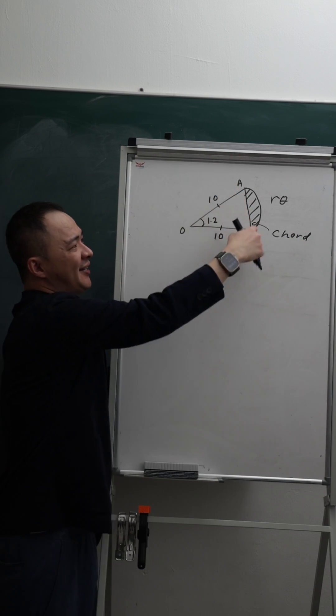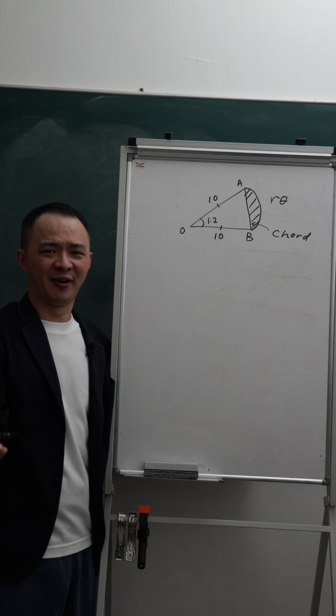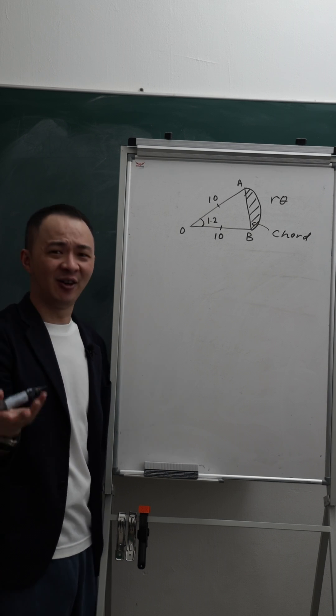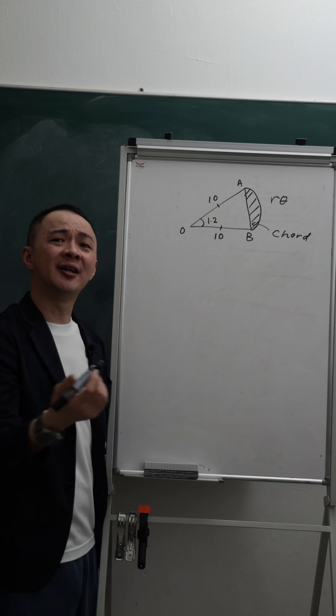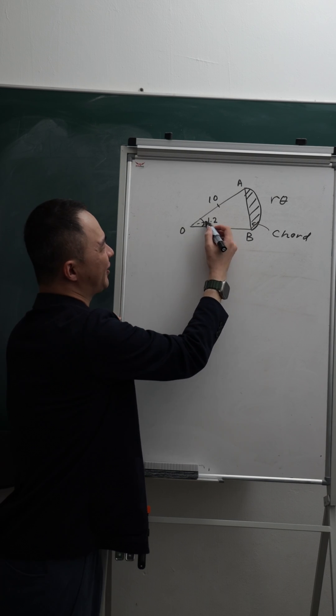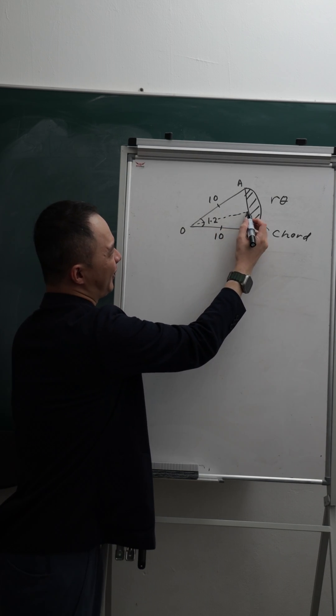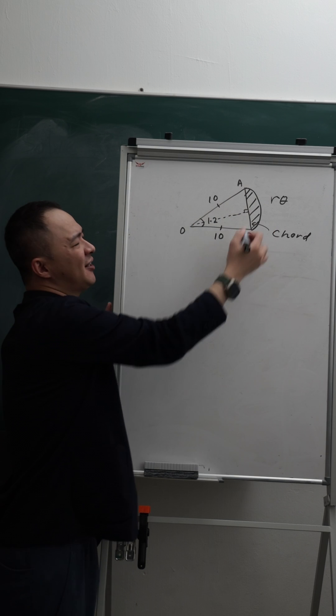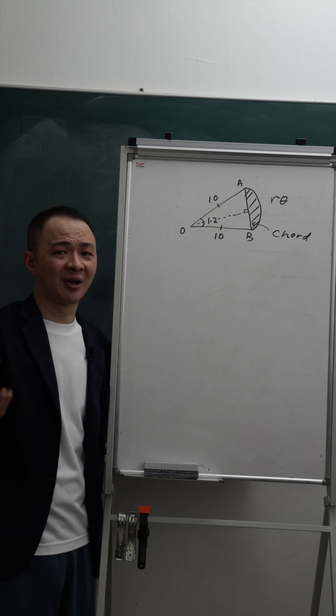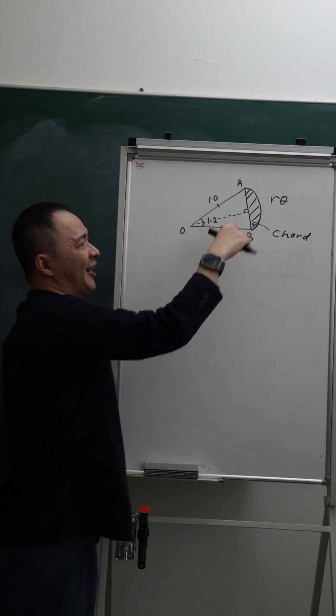Alright, so in order to find this line, some students will use the cosine rule. But the cosine rule is very long. Some students will use the SOHCAHTOA, which is they will actually split this one into half and then see a right angle triangle and then try to apply the SOHCAHTOA, trying to find half of the length and then multiply by two.